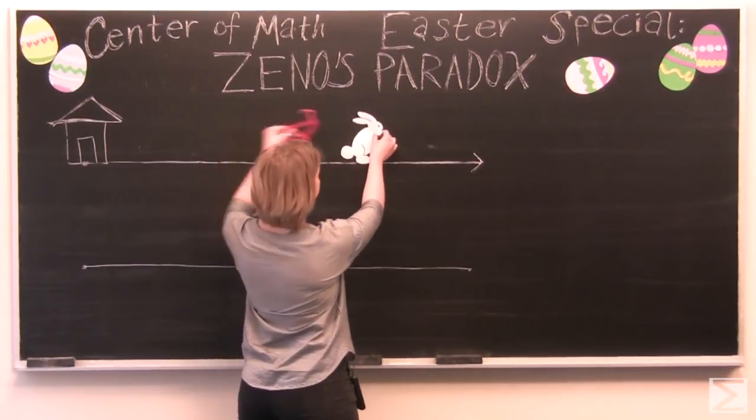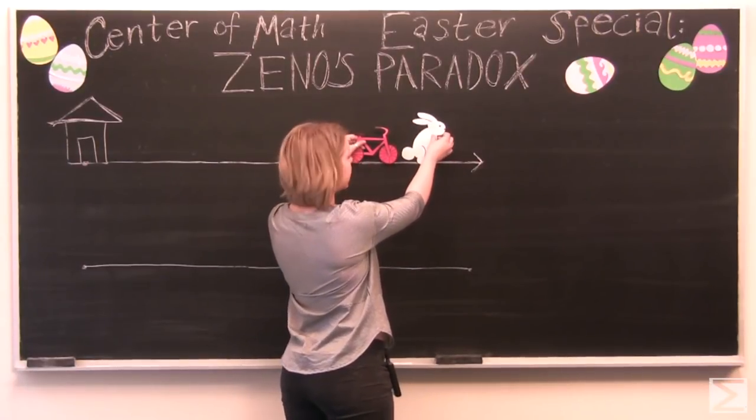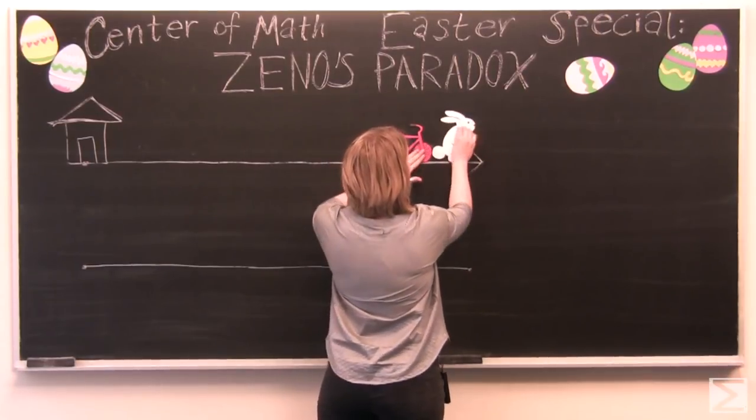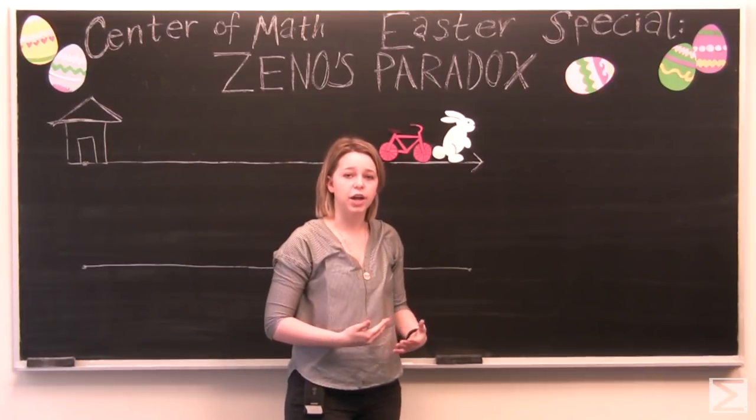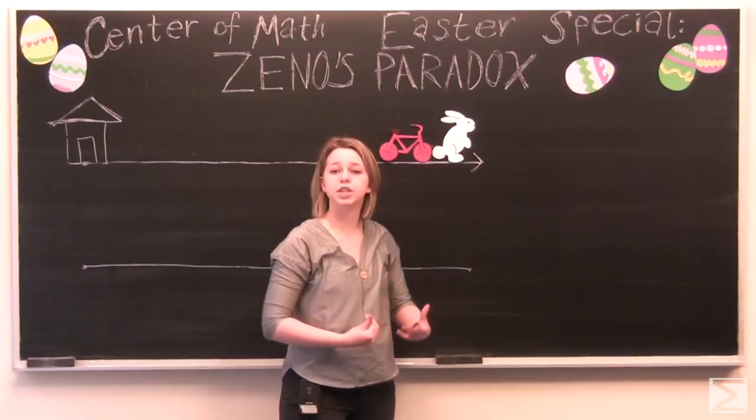And so John catches up those 50 meters. But then the Easter Bunny is 25 meters ahead. And this is going to continue infinitely. The Easter Bunny is always going to be a little bit further ahead of John if John catches up to the Easter Bunny to where the Easter Bunny just was.